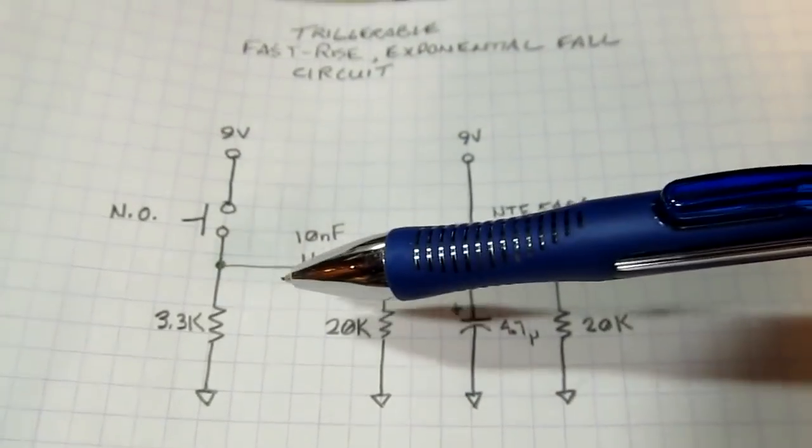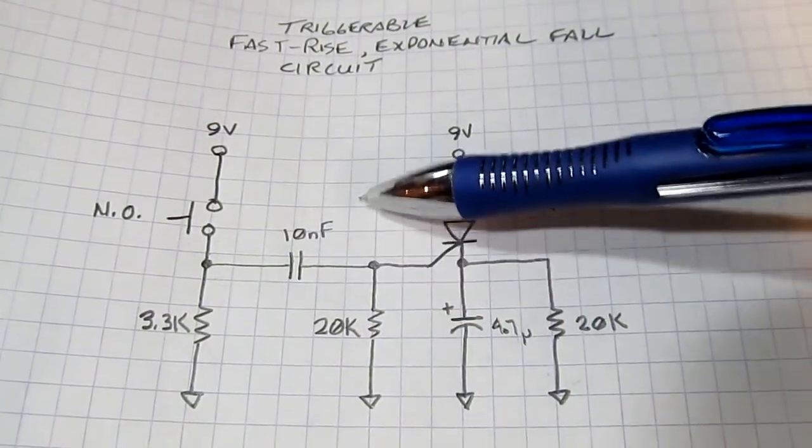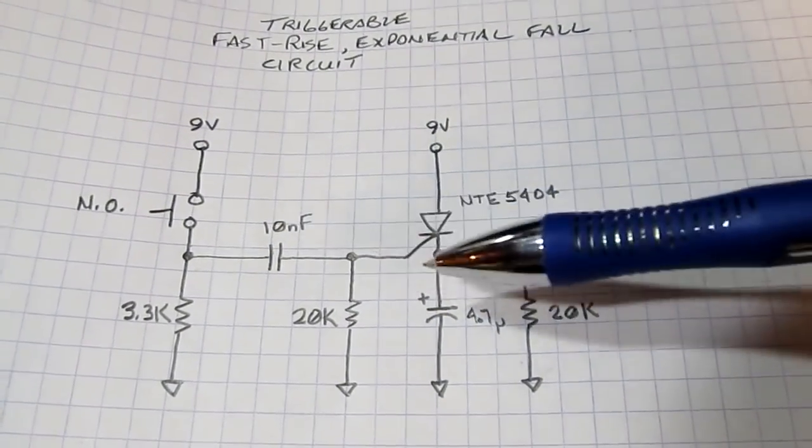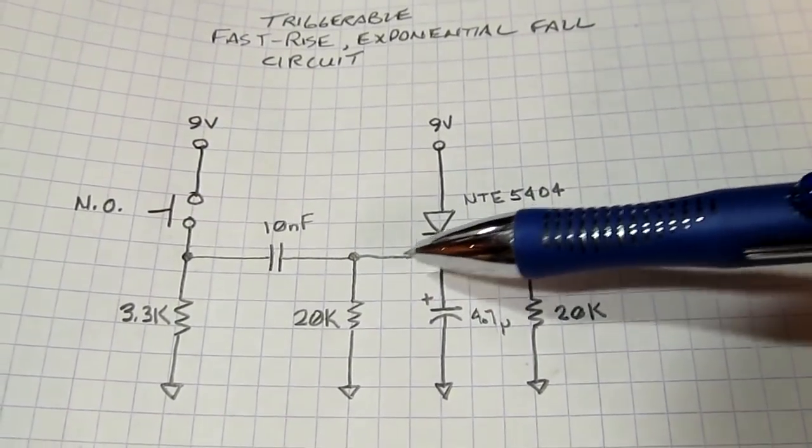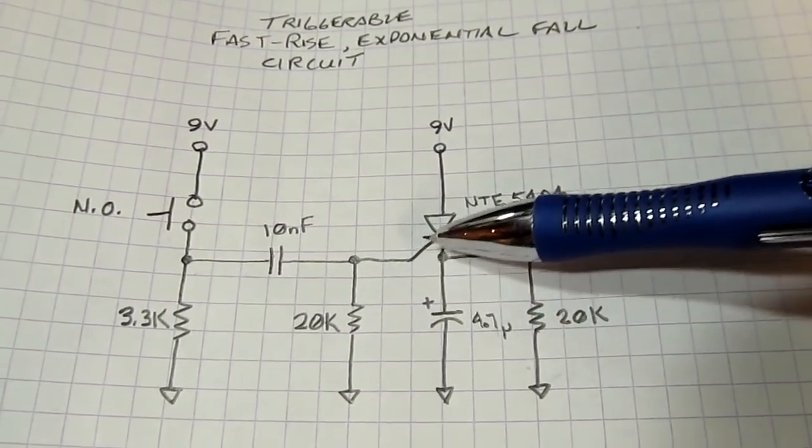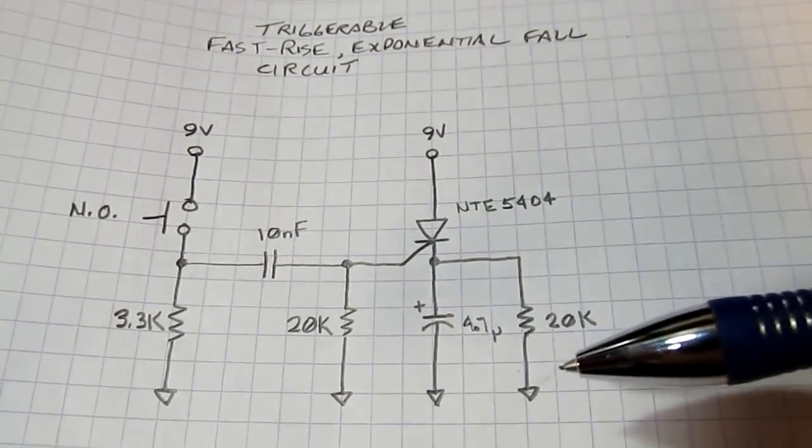We AC couple that signal into the gate of the SCR. So that when we first push that switch, we'll get a fast pulse through this capacitor, which will basically turn on that and bias the gate and turn on the SCR.